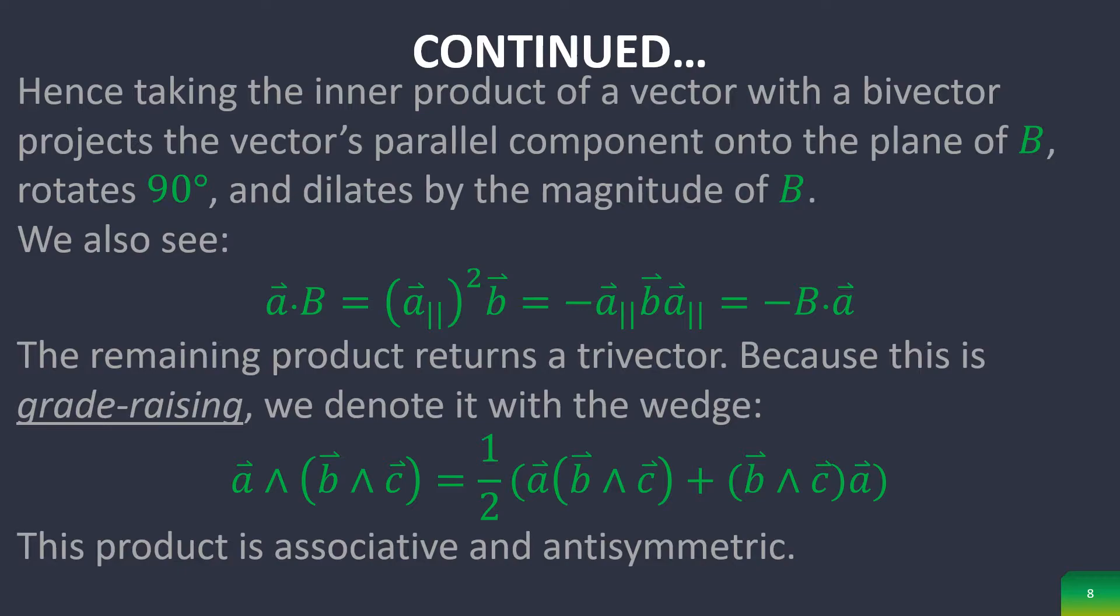We also see that a vector dot a bivector is anti-symmetric. And for the wedge product, it is grade-raising. So we denote it with the wedge, and this is what gives us a trivector.